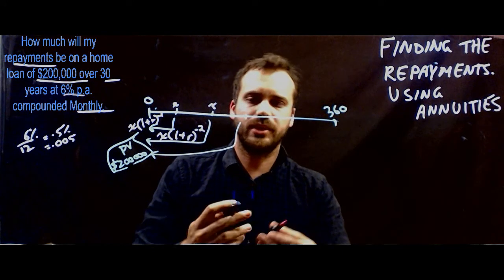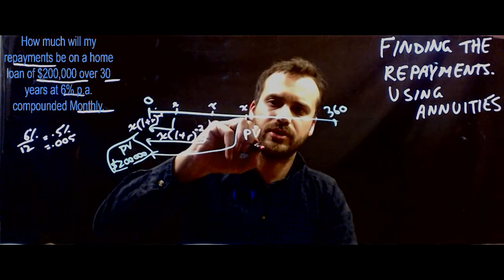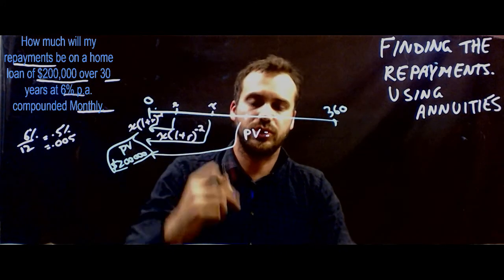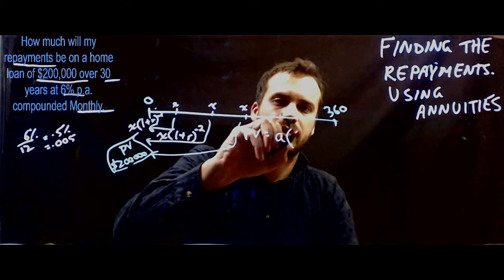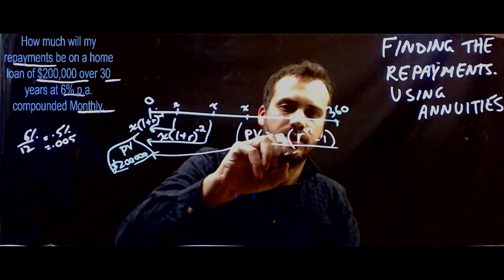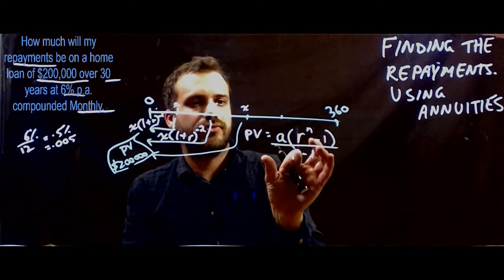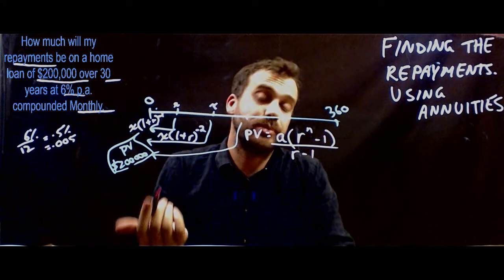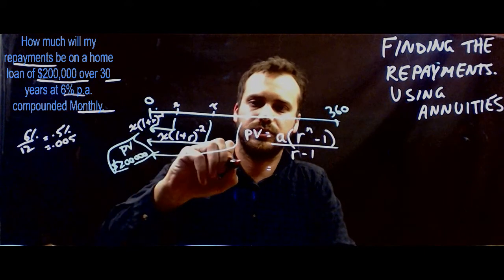So let's put this into our formula. And this is going to get a little bit complicated. The present value is equal to A times R to the N minus 1 over R minus 1. So that's the formula that we're going to use. Let's put each of our things in turn here. The present value, that's simple, $200,000.